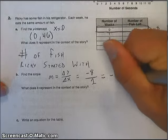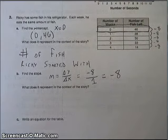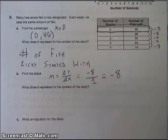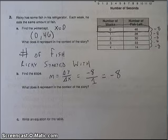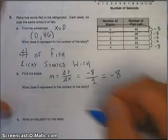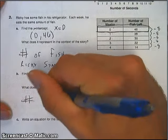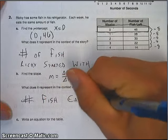So the slope, then, is just negative 8. What does this represent in the context of the story? Well, that's how many fish are going away, or being eaten every week. So that's just the number of fish eaten per week.